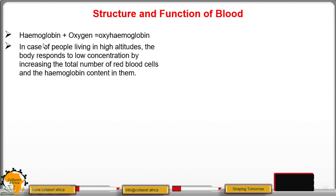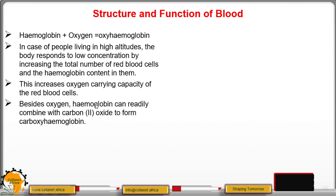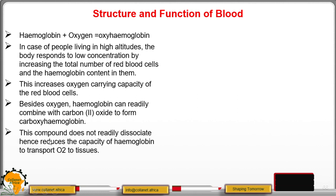In people living at high altitudes, such as the top of mountains, the body responds to low oxygen concentration by increasing the total number of red blood cells and hemoglobin content. This increases the oxygen-carrying capacity of red blood cells. Apart from oxygen transport, hemoglobin can combine with carbon monoxide to form carboxyhemoglobin, which does not readily dissociate, reducing the capacity to transport oxygen.